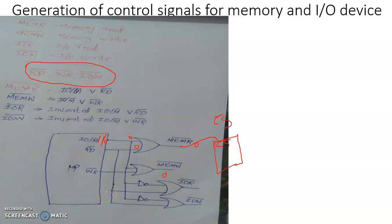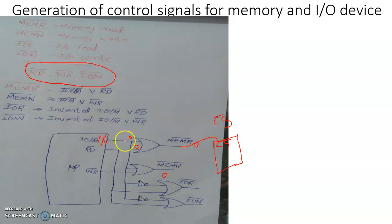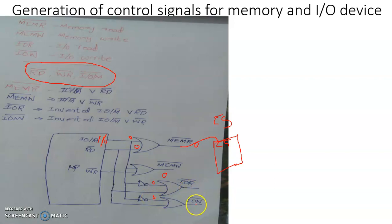Similarly, for the generation of active-low read or write signals associated with an input/output device, we can perform an OR operation of RD̄ and WR̄ lines with the negated IO/M̄ line. When you negate the IO/M̄ line, which is high when an IO device is being addressed, this creates a logic low. The negated IO/M̄ combined with RD̄ or WR̄ helps generate active-low IOR̄ and IOW̄ signals.